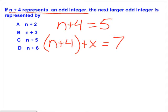Since we know that n+4 equals 5, we can substitute 5 in for n+4. Therefore, 5 plus x equals 7.